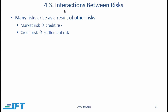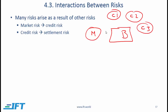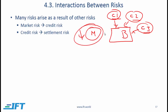Risks are interrelated and many arise as a result of other risks. Consider a bank with exposure to the market, facing market risk, that has also made loans to several companies, creating credit risk. If the market crashes, those companies — which also have market exposure — will have reduced ability to make payments to the bank, causing credit risk to increase. So market risk going up leads to an increase in credit risk.